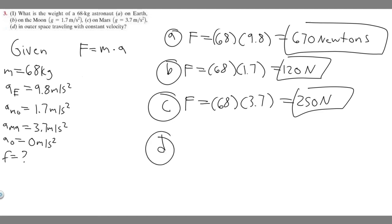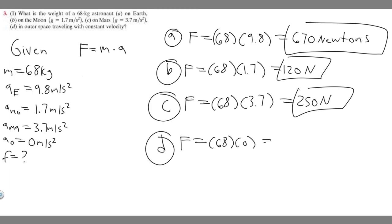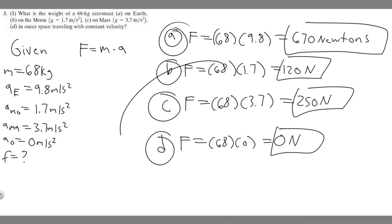And then D: force equals mass times acceleration, so 68 times zero — because in outer space acceleration is zero. Anything times zero is zero, so D is just zero newtons. These are your answers for A through D, and that's how you solve this problem.